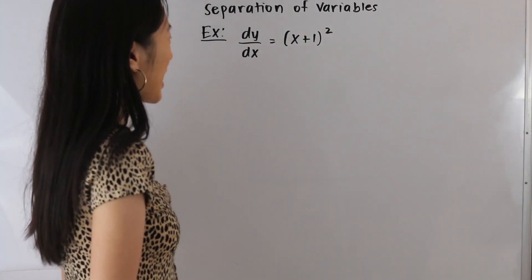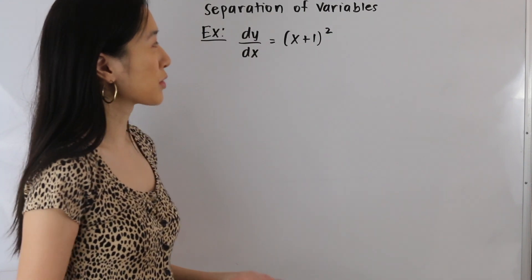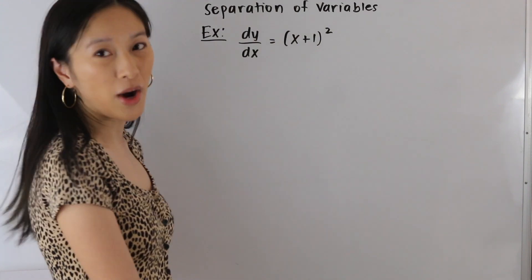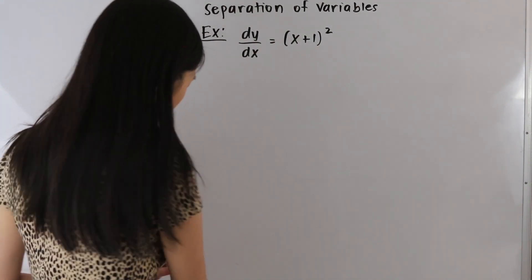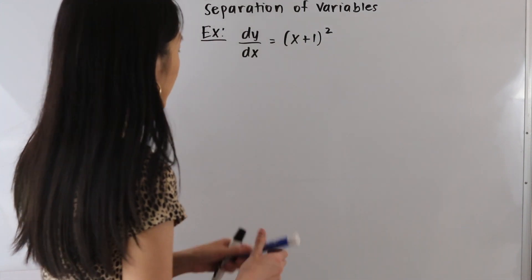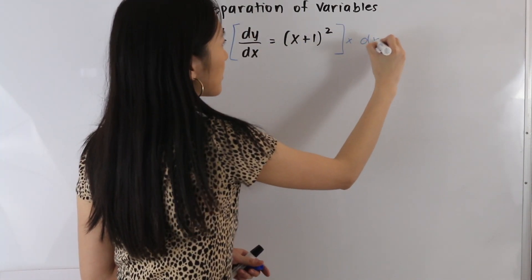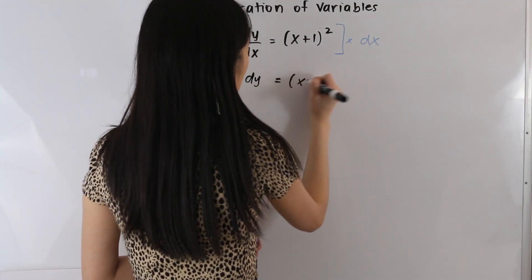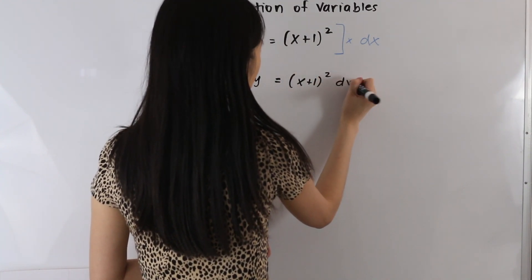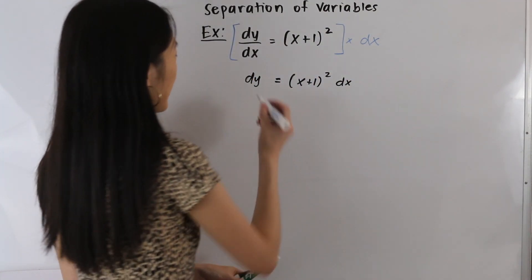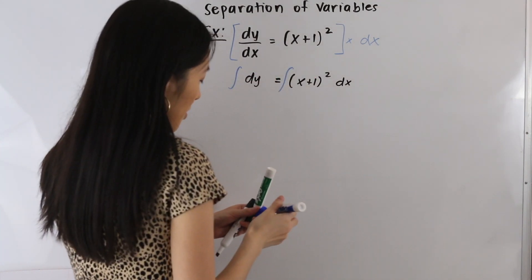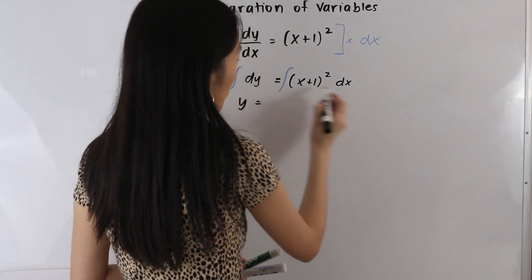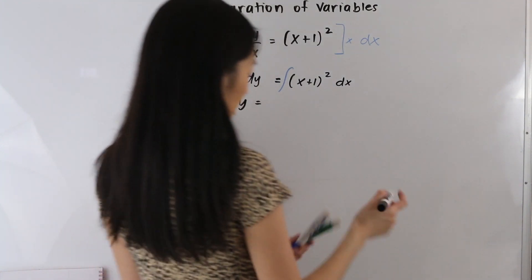Let's take a look at this last example. We have dy over dx is equal to x plus 1 squared. We want to get all of our x variables on one side and all of our y variables on the other. So let's start out by multiplying both sides by dx, giving us dy is equal to x plus 1 squared dx. From here, we can go ahead and integrate both sides, and the left hand side just equals y. The right hand side we can solve using a u-substitution.